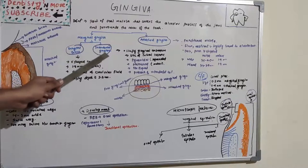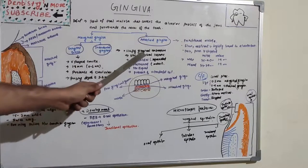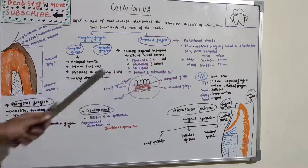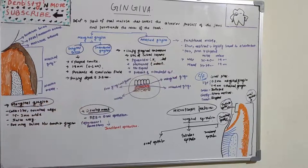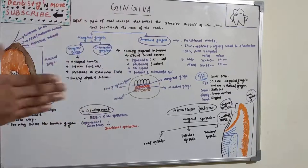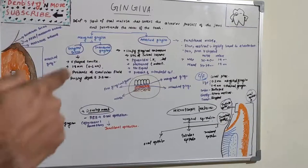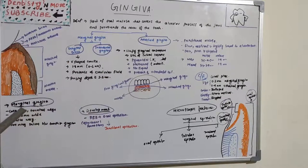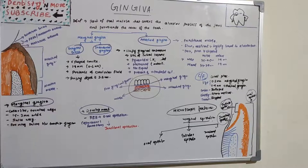Next we have interdental Gingiva, which is located between the two teeth. It occupies the gingival embrasure, which is the site of initial lesions. It is pyramidal in the anterior region and flattened in the posterior region. There is a valley space or shallow space between the anterior and posterior regions known as the col. Marginal Gingiva is a collar-like terminal edge which is free to move and is 1.5 to 2 mm wide, forming a sulcus between tooth and Gingiva.